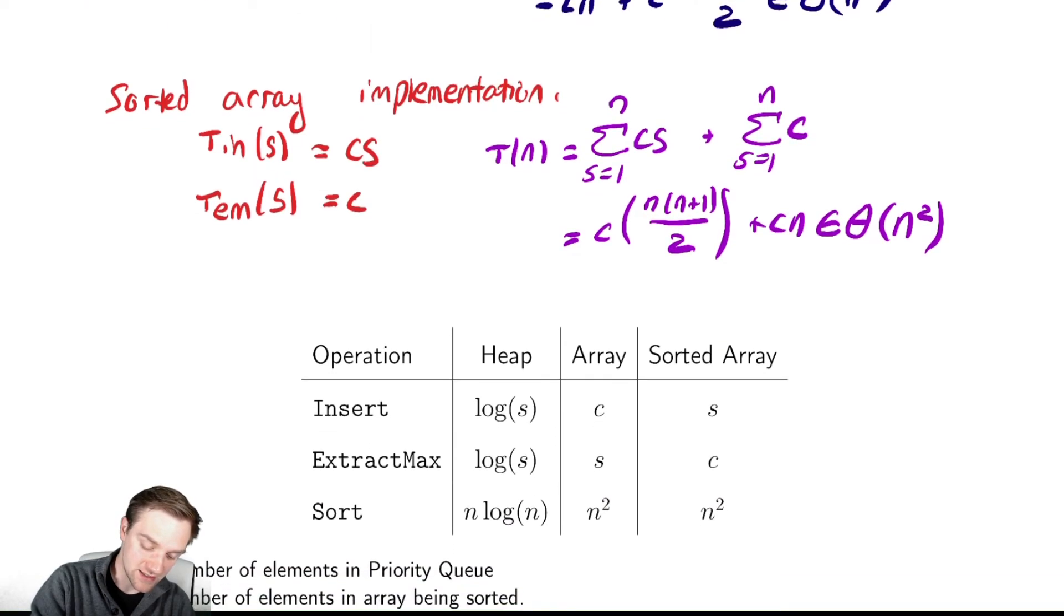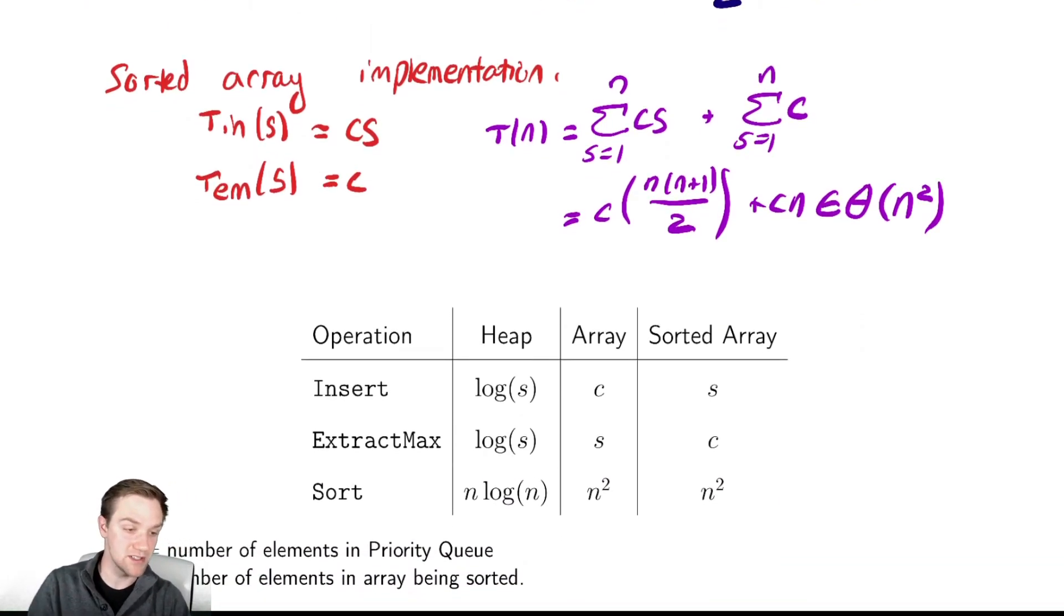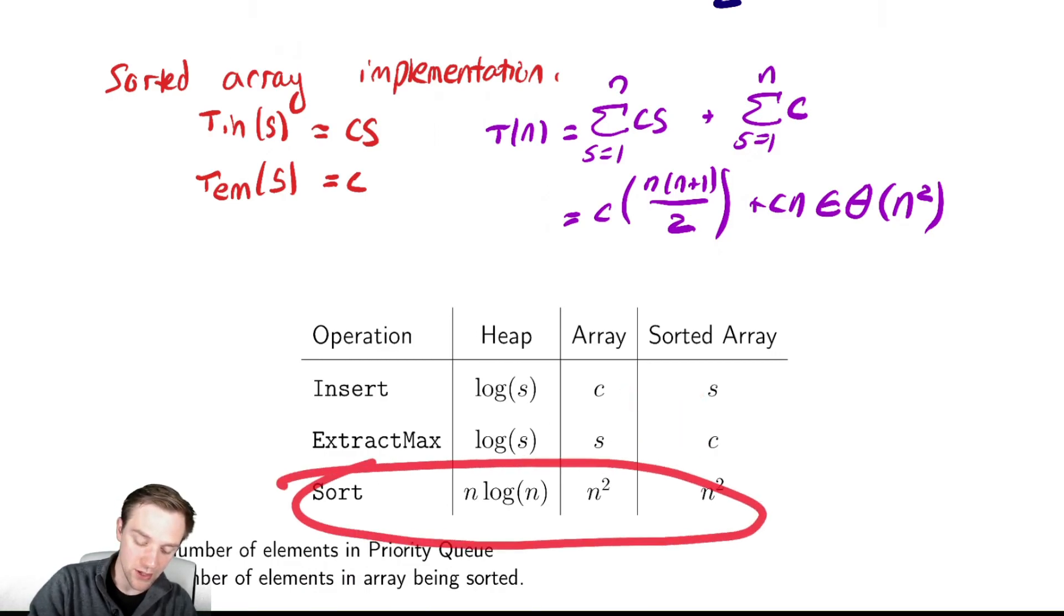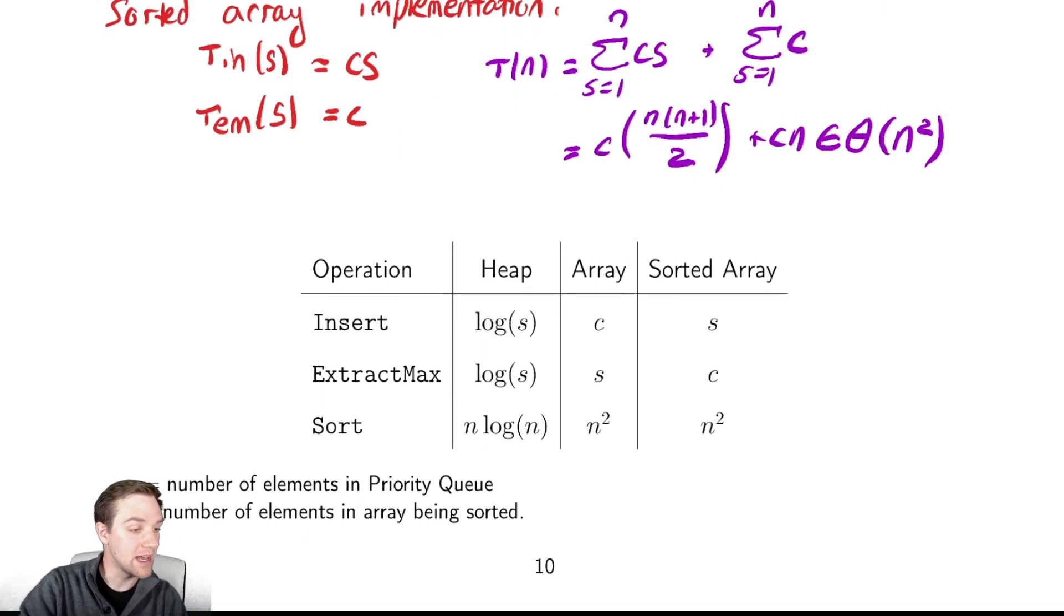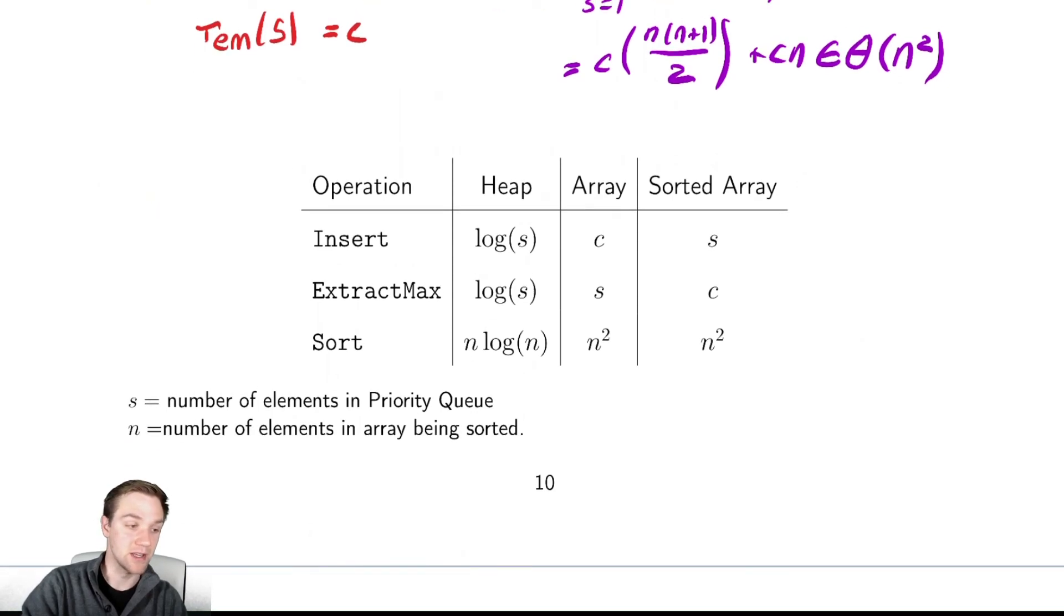We have cataloged all of that into this nice table to compare our three implementations. We have the heap implementation, which hedges our bets between the two methods - they both take log of s. Then we have our array implementation, where we gain serious benefits in insertion while losing something in extract max. And sorted array is the exact opposite. For completeness, we included how long it takes to sort for all of those to show that heap, because it's balancing those two things, is a more efficient data structure. s is the number of elements in the priority queue, and n is the number of elements being sorted. So that is two alternative implementations that have some benefits, but unfortunately neither are better at sorting than the heap implementation we've already discussed.